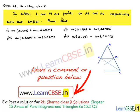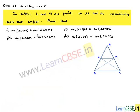In triangle ABC, L and M are points on AB and AC respectively such that LM is parallel to BC. Prove that: area of triangle LCM is equal to area of triangle LBM; area of triangle LBC is equal to area of triangle MBC; area of triangle ABM is equal to area of triangle ACM; and area of triangle LOB is equal to area of triangle MOC.